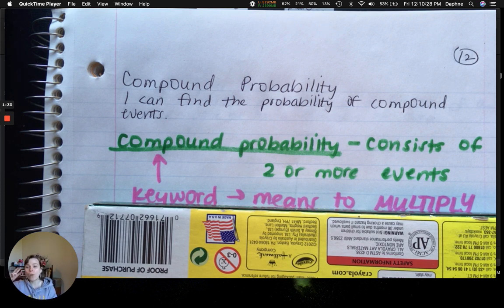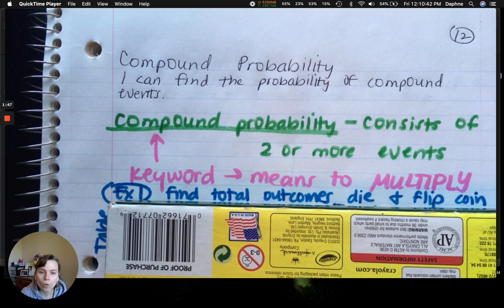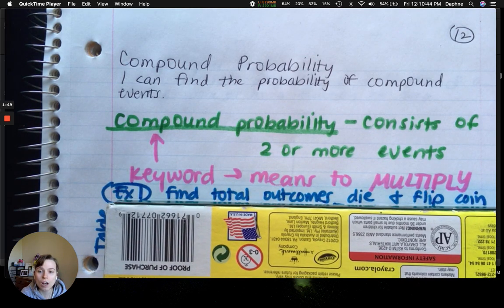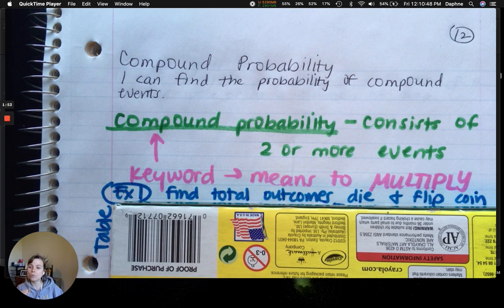We're going to do three examples of ways that we can do this. So one example will be with the table. One will be with a tree diagram. And the third will be the quick method, i.e. just multiplication. So, for example one, we're going to find the total outcomes of rolling a die and flipping a coin. And we're going to use making a table to help us with that.